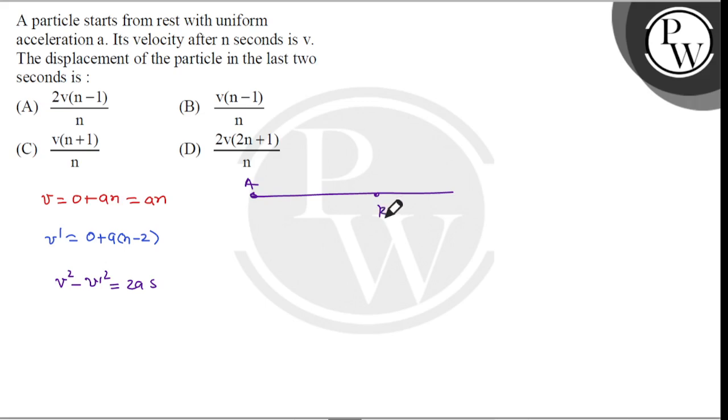This is at (n minus 2) seconds and this is at n seconds. Here the velocity is v dash and here the velocity is v. We have to calculate the displacement from b to c, so we can calculate it using the third equation of motion.